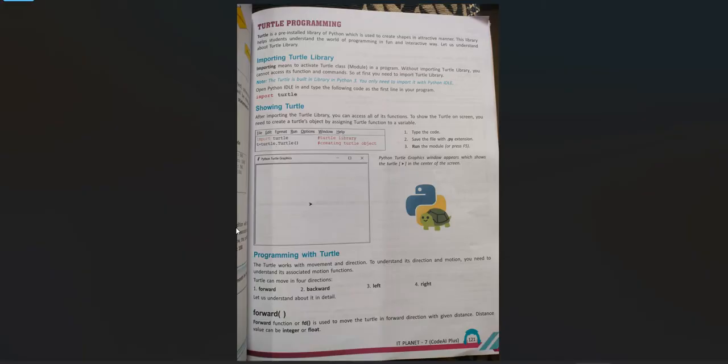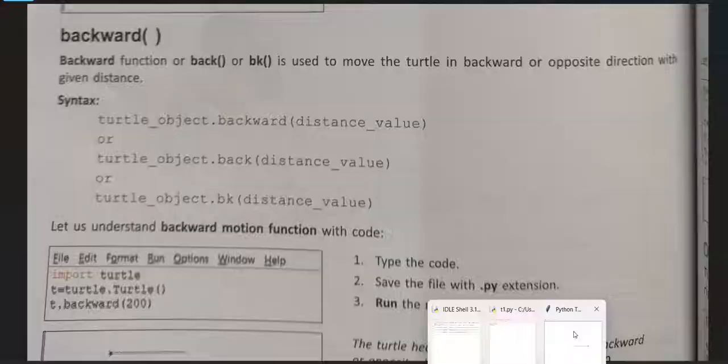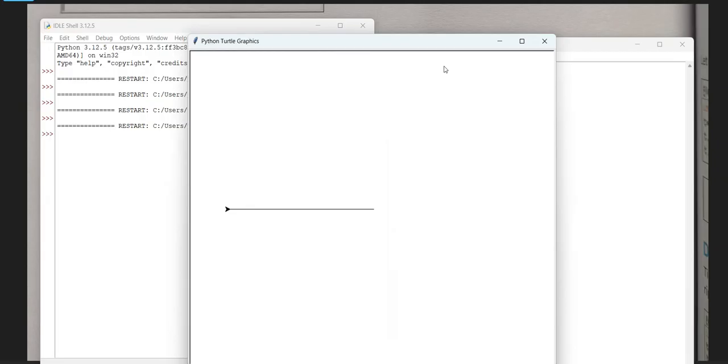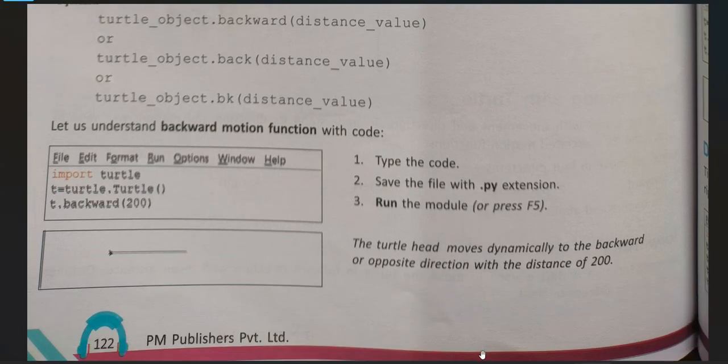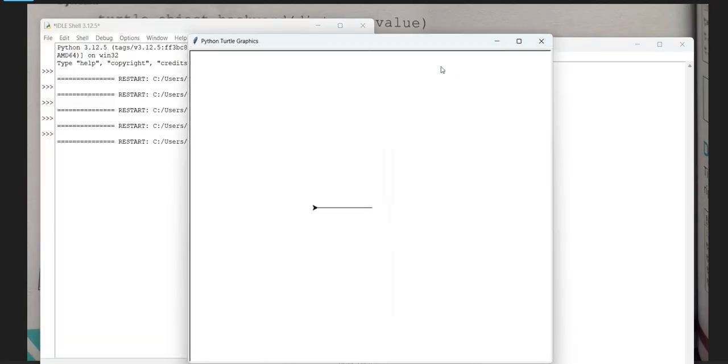Let's move backward. What is backward? Backward function or back or BK - three names for backward supported by Python - is used to move the turtle in backward or opposite direction with a given syntax. Now we will directly try this. So we can directly try here. Backward. Here is a distance. So you can try distance, other distance as well. Now run this. Now see, it moves backward. Understood. Look here. Now let's try back. Now you can try BK by yourself. Look here. Super.